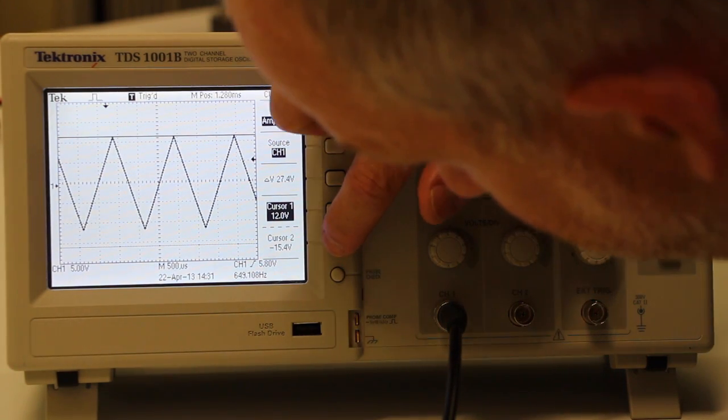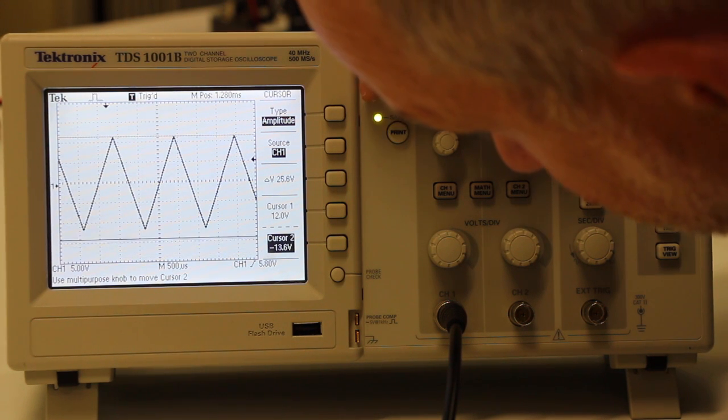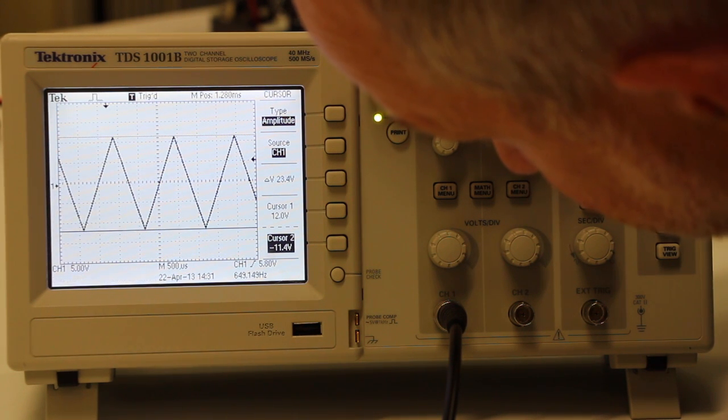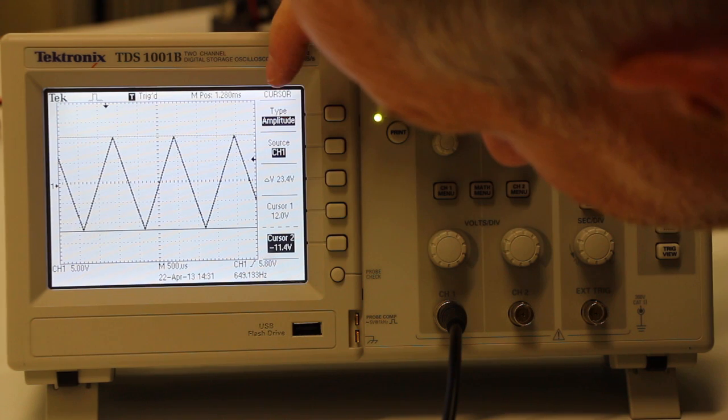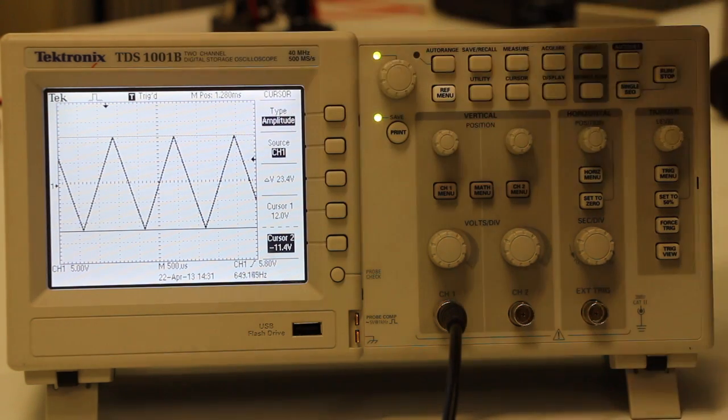You can also go down here to cursor two, and now you're controlling a second cursor, and you can move that, say, to the bottom here, which is at minus 11.4 volts. That's telling you delta V, the range in voltage is 23.4 volts.